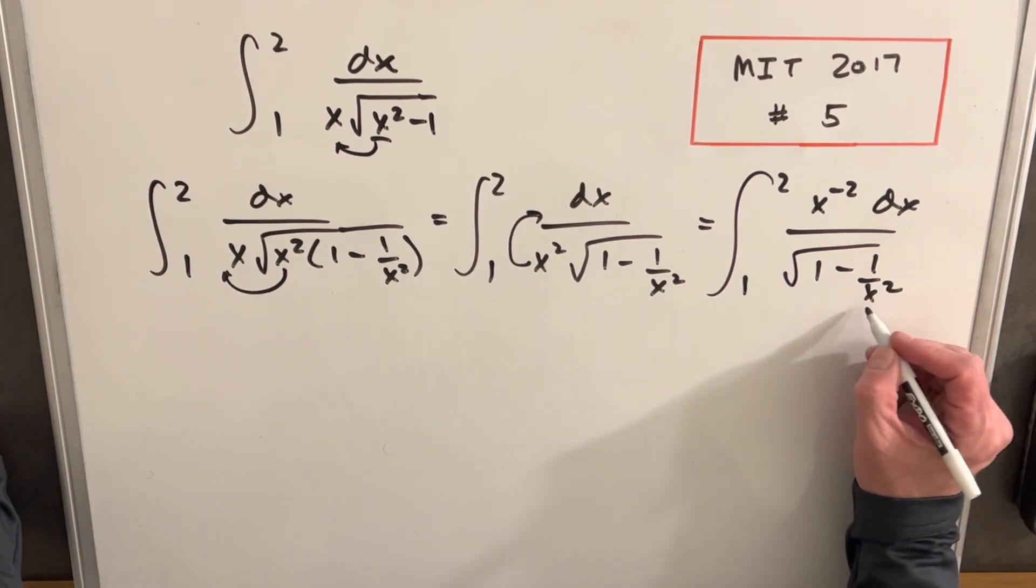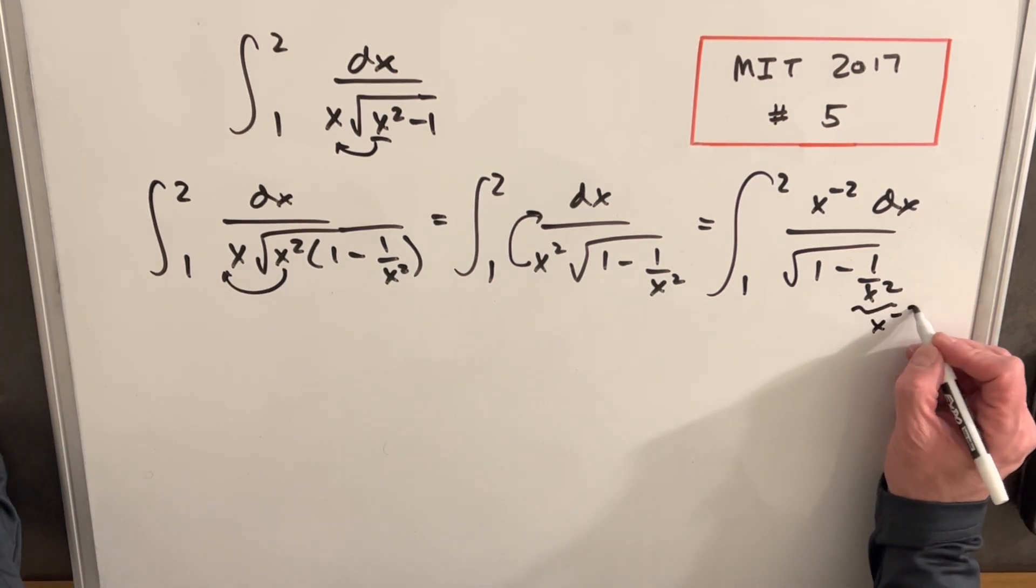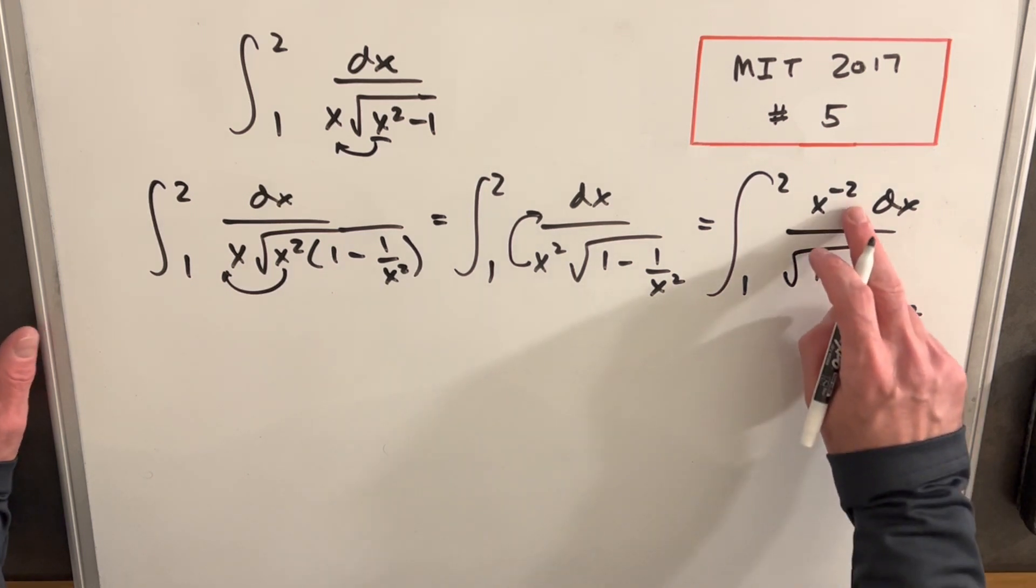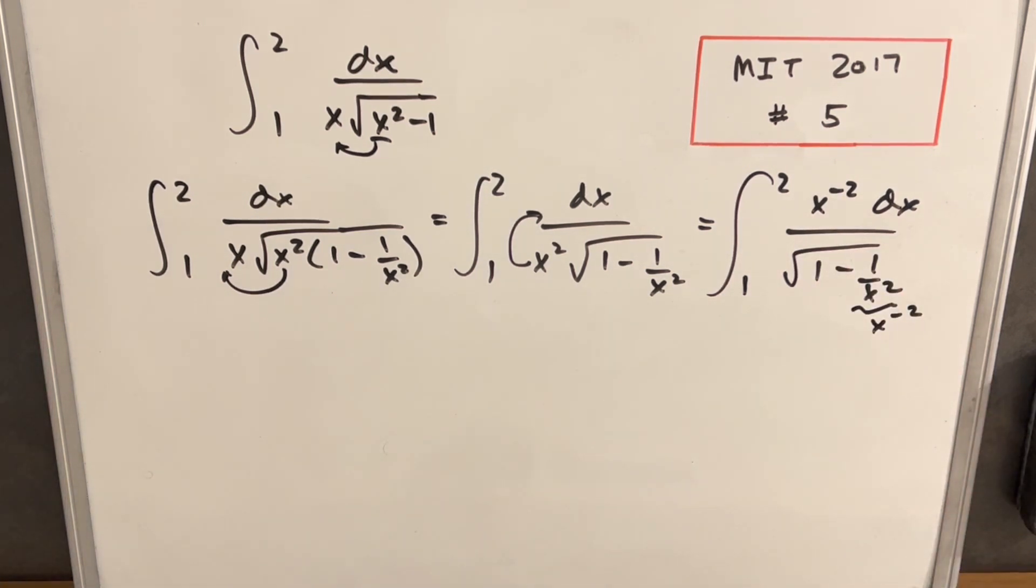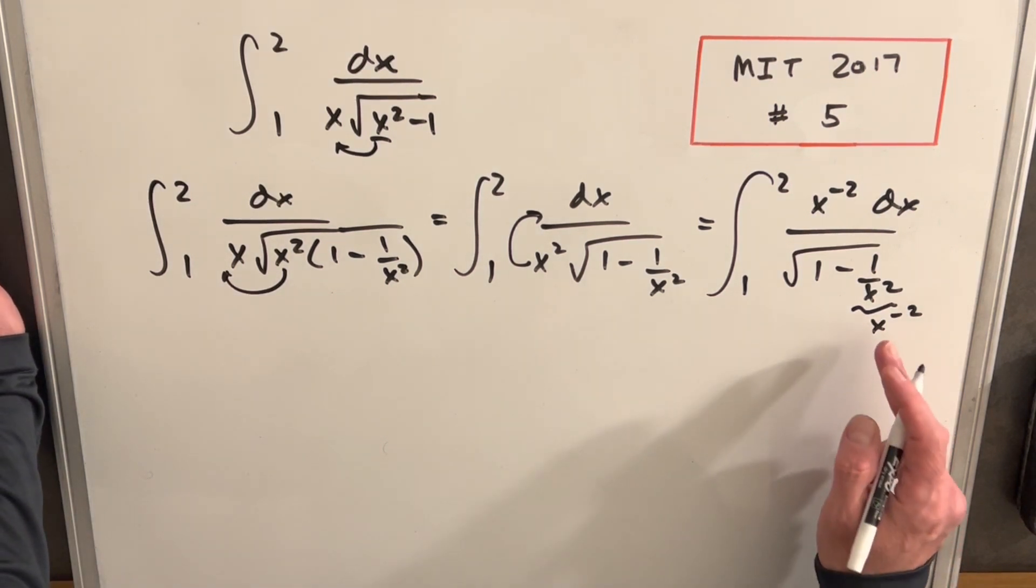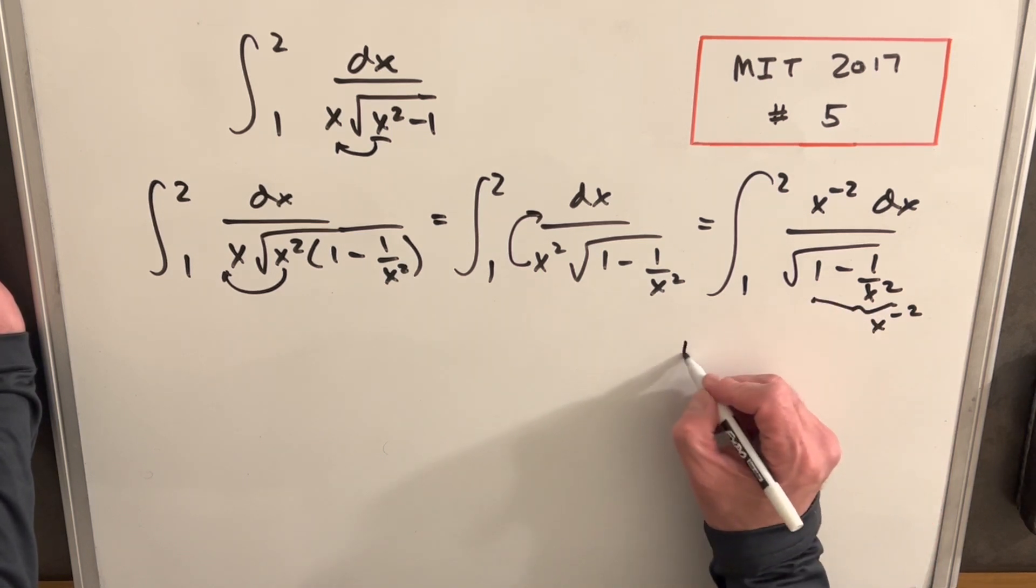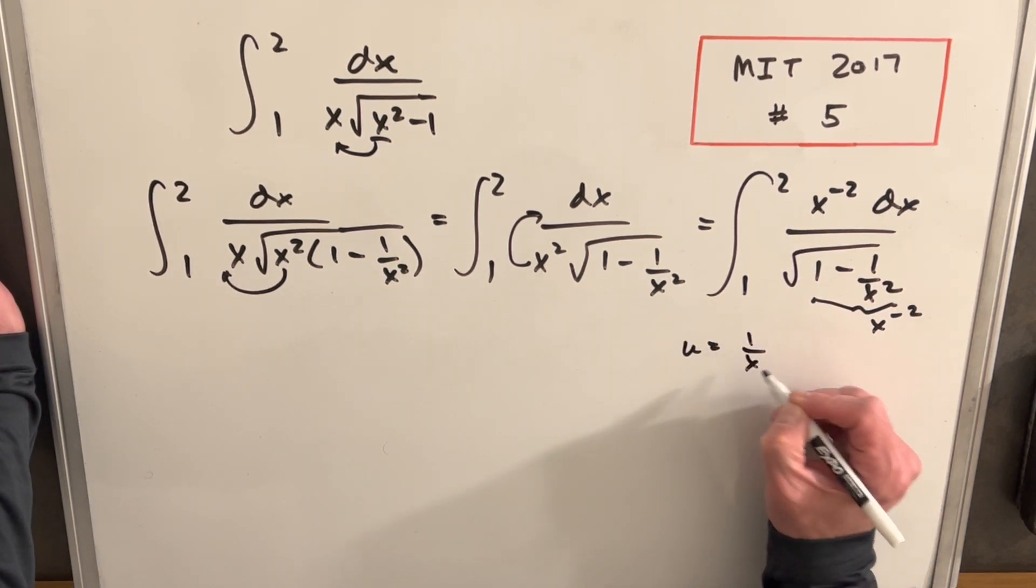Now I want to do a u sub. Notice that this here is x to the minus two. So when we get the derivative of this, it's not really going to match up with what we have in the numerator. It would probably work, but we want to get this a little cleaner. So instead of making the substitution for the whole numerator, the whole denominator, what I'm going to do is just make a u substitution for one over x.